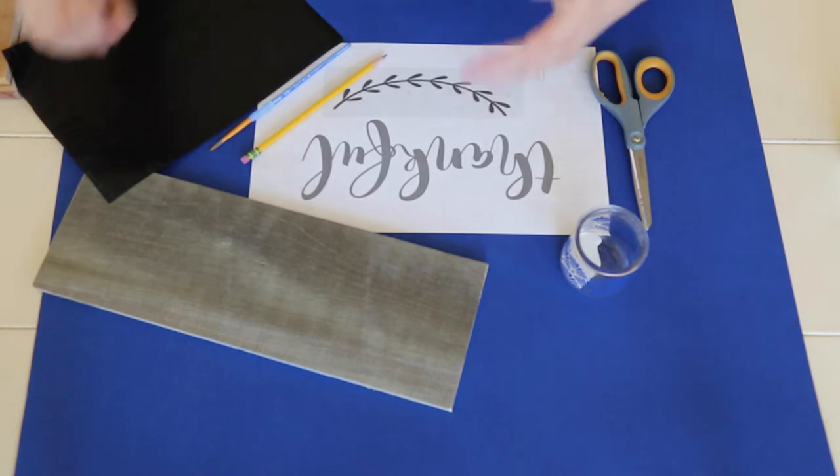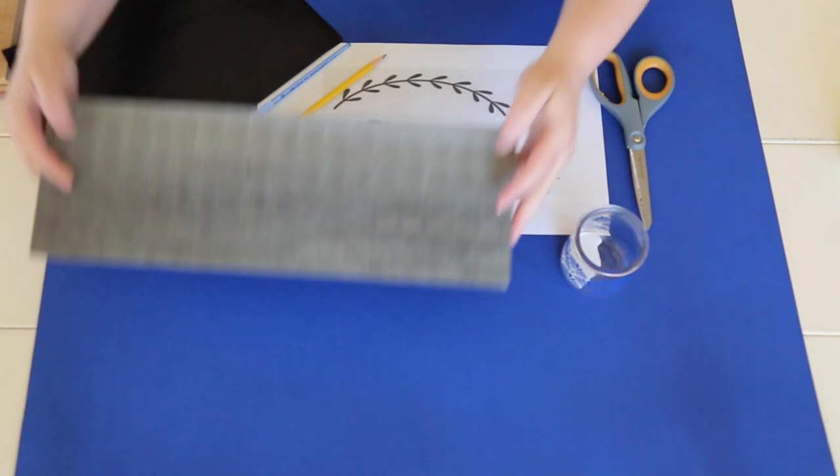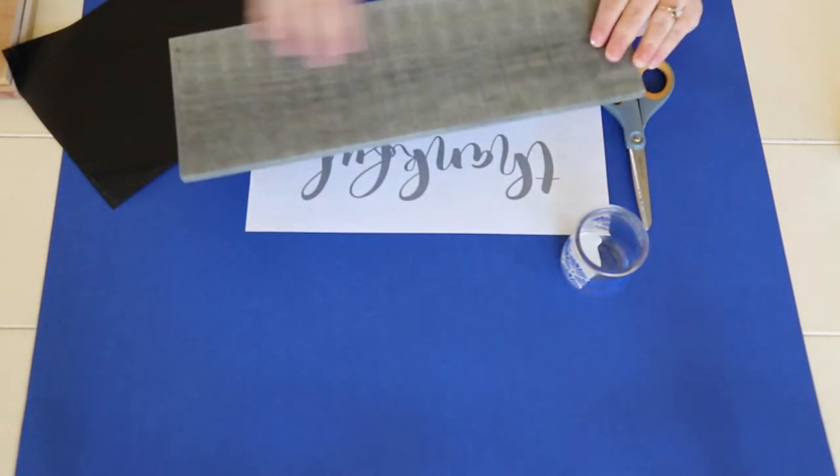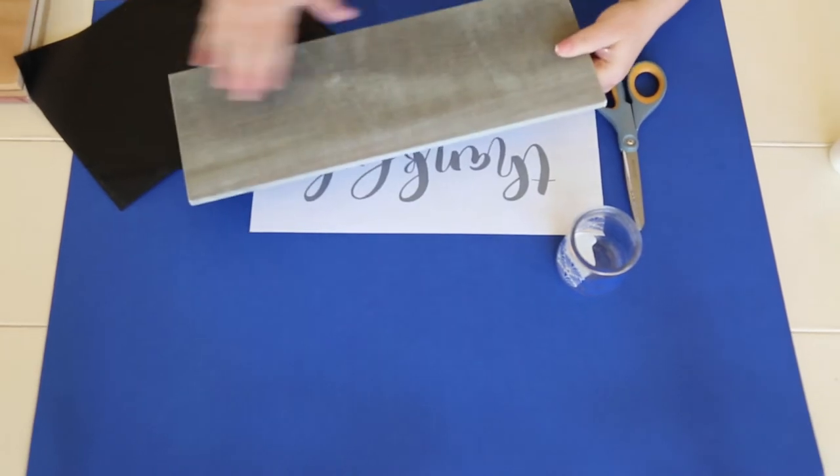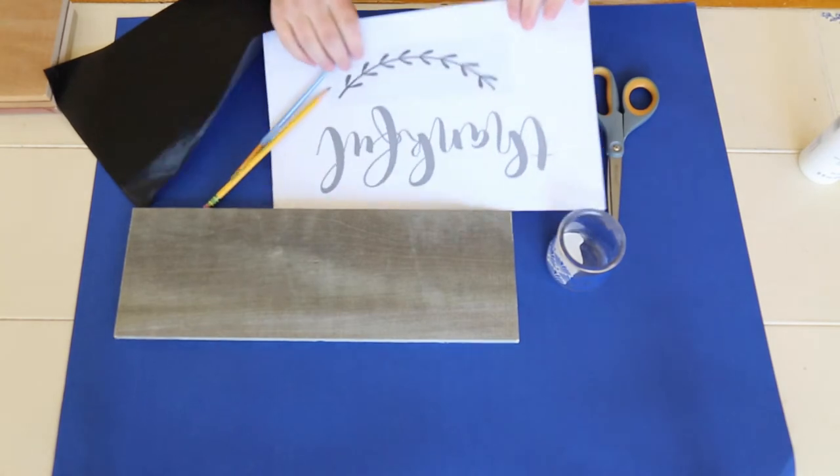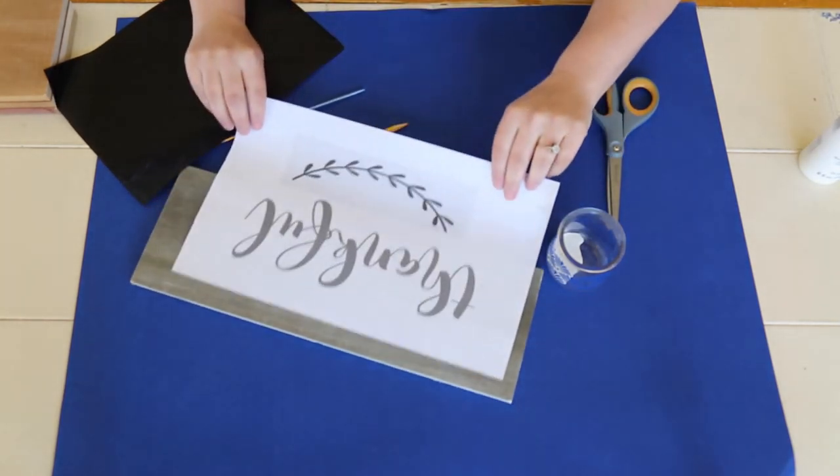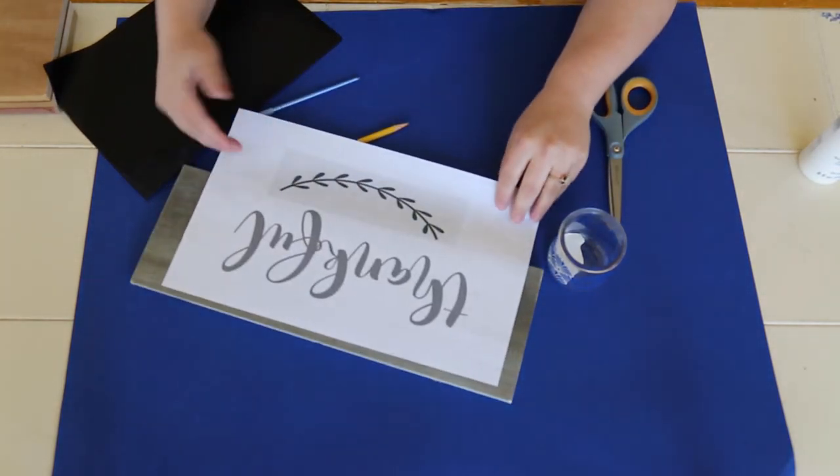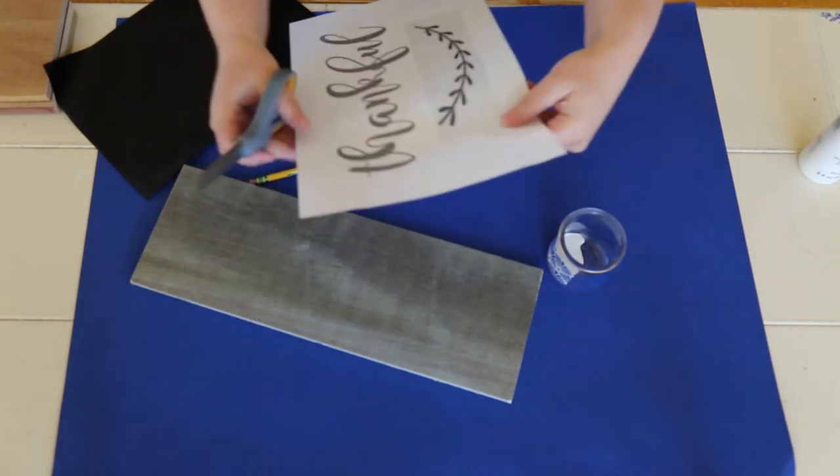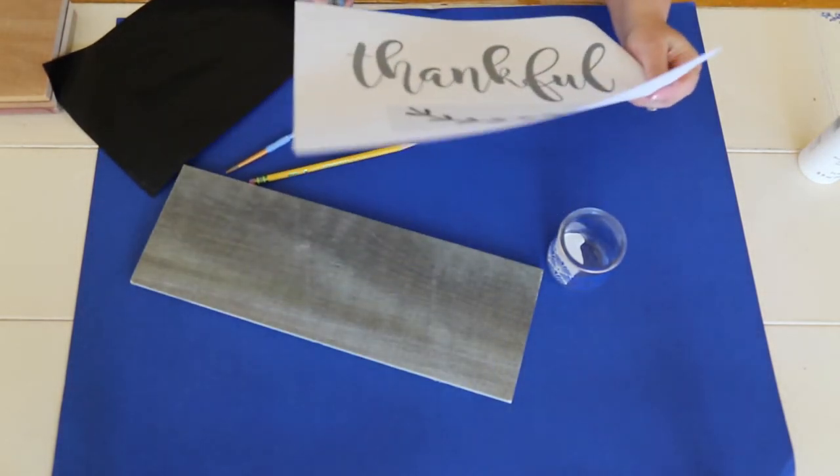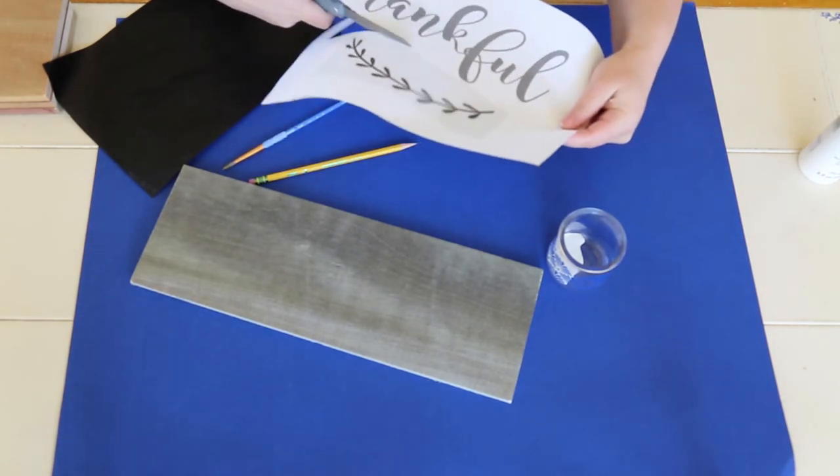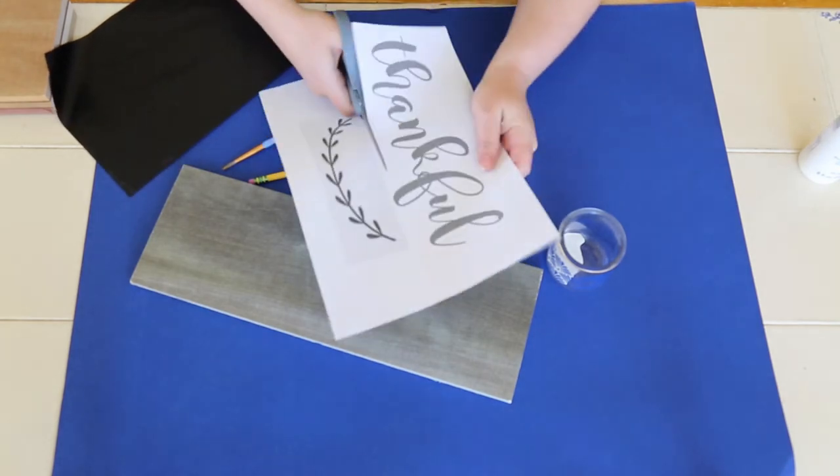So this wood sign, you want to look at both sides of the board. This side is a little bit rough so I'm going to use this side. I also think for me it's easier to kind of move the design around and I'm going to cut it apart because I think it's much easier for me to get it centered if the design is a little bit smaller. So I'll go ahead and do that.